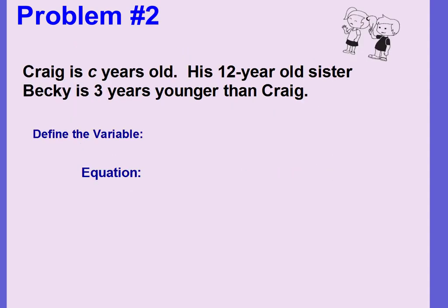Problem number two. Craig is c years old. His 12-year-old sister, Becky, is three years younger than Craig. You're going to need to define the variable and then write the equation. We are actually already given the variable c, so we need to say what c represents. Let c equal Craig's age.